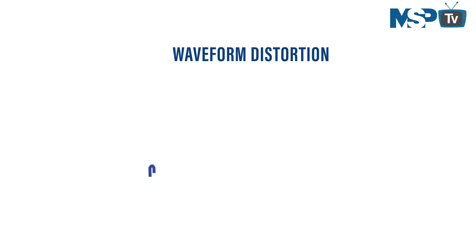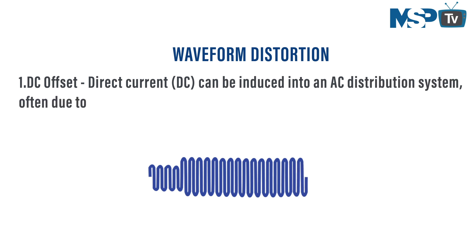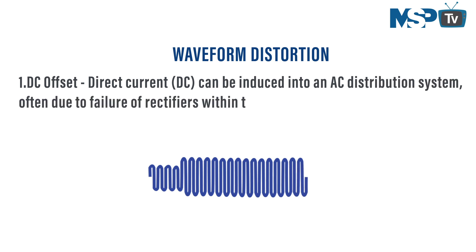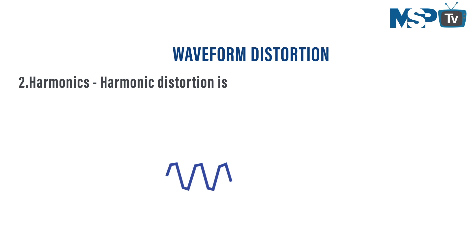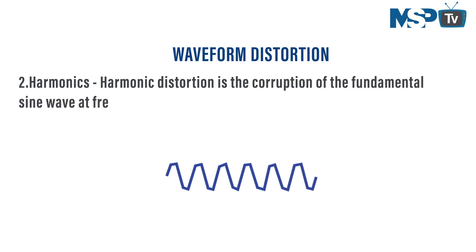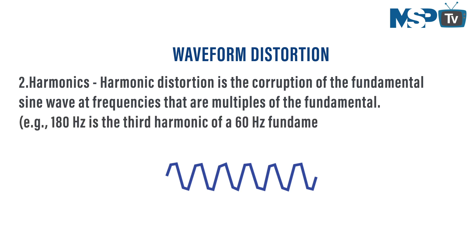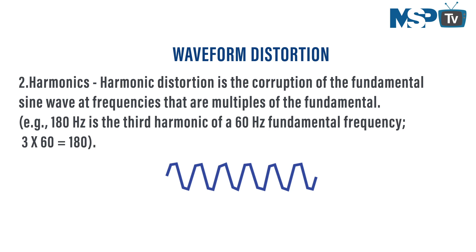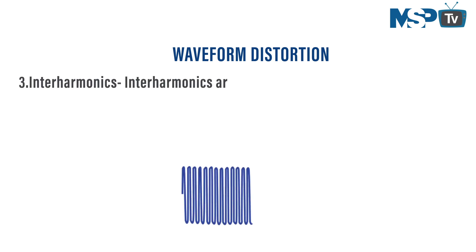The fifth problem is waveform distortion, which has five types. First, DC offset: direct current can be induced into an AC distribution system, often due to failure of rectifiers within AC-to-DC conversion technologies in modern equipment. Second, harmonics: harmonic distortion is the corruption of the fundamental sine wave at frequencies that are multiples of the fundamental — for example, 180 Hz is the third harmonic of the 60 Hz fundamental frequency, which is 3 × 60 = 180.